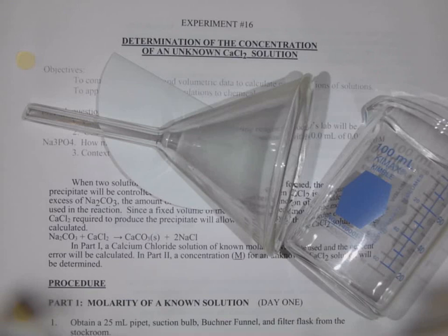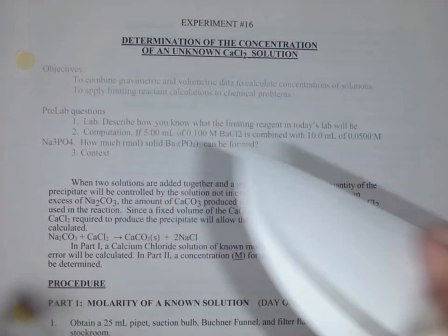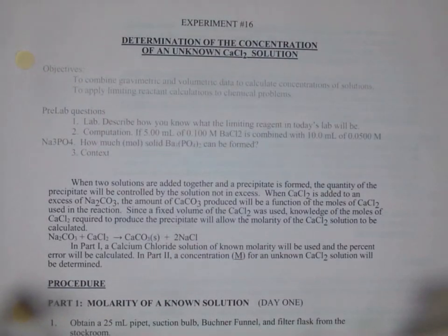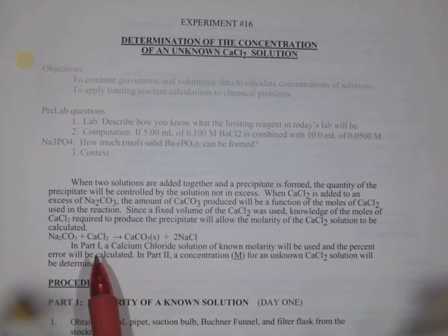Welcome to Experiment 16, the Determination of the Concentration of an Unknown Calcium Chloride Solution. To get started, what we're going to be doing in this lab is conducting a reaction where we take sodium carbonate and allow it to react with calcium chloride.